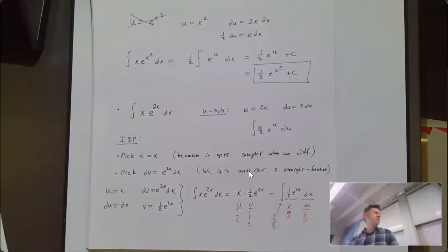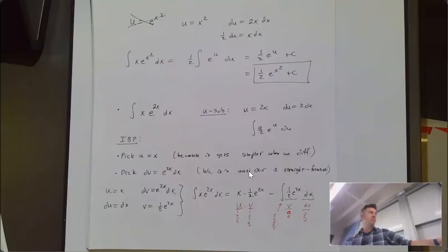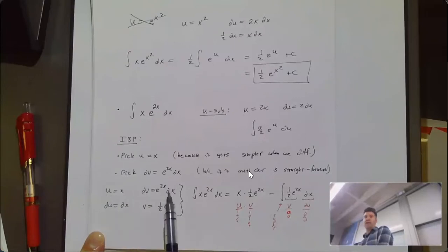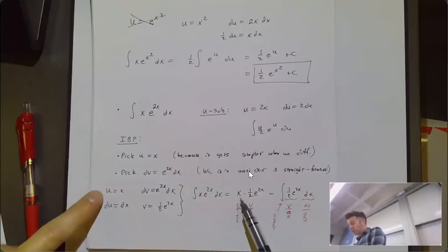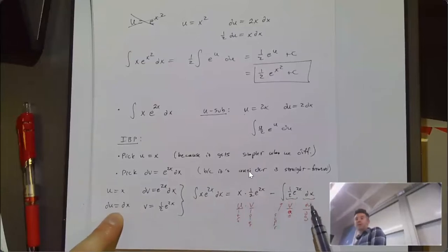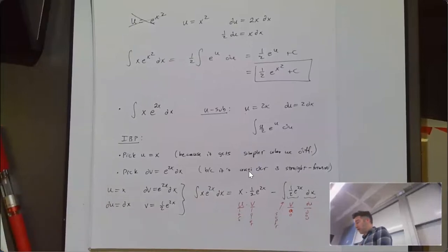The formula is uv minus the integral of v du. You write in what u and v actually equal. So you write what u equals times what v equals, minus the integral of what v equals times du. The hope — and it's true here — is that this new integral is easier to anti-differentiate than the previous thing.